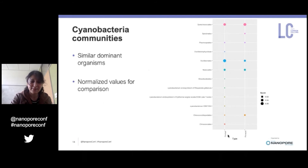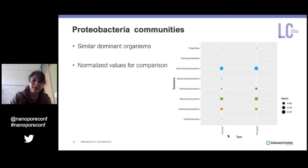Given that some studies of ancient stromatolites pointed to cyanobacteria being a player, I decided to look at families within this phylum. And while there is still more diversity in the conical stromatolites, there doesn't seem to be a very visible difference in abundance of the more dominant cyanobacteria. Taking a closer look at proteobacteria, which were the most abundant of the phyla present in both samples, we saw a surprising similarity in abundances between the communities at a class level.